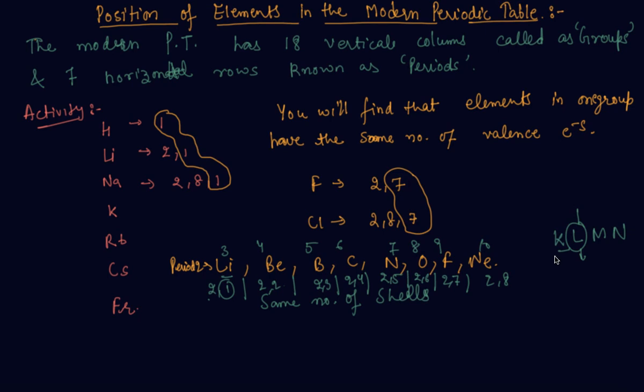That is how the scientists arrange the elements in a period and a group. Now I hope that you are clear about how the position of the elements were determined in the modern periodic table.